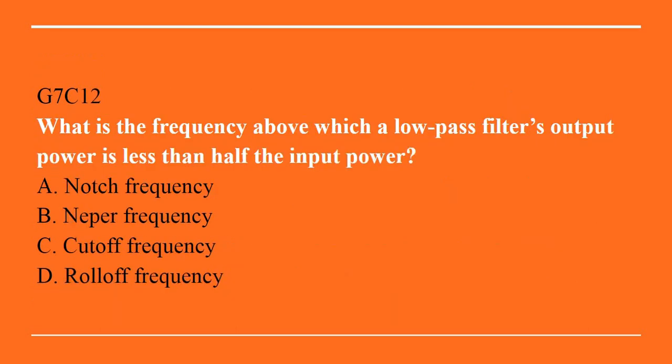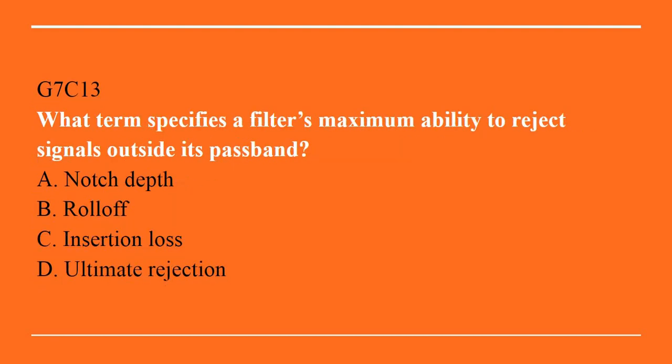G7C12: What is the frequency above which a low-pass filter's output power is less than half the input power? A. Notch frequency. B. Nipper frequency. C. Cut-off frequency. D. Roll-off frequency. Answer is C. Cut-off frequency.